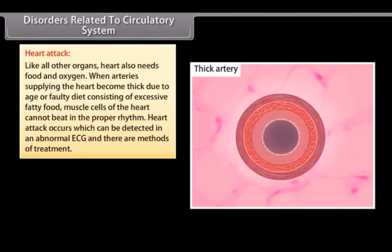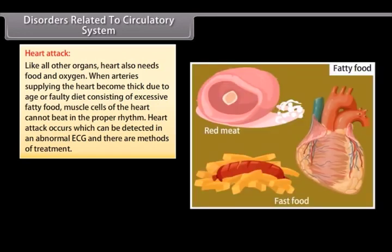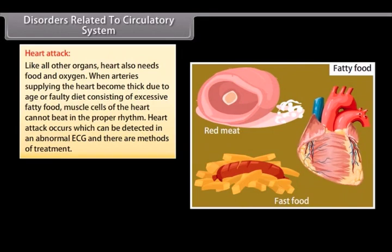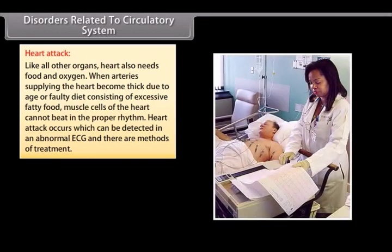Disorders related to circulatory system. Heart attack. Like all other organs, heart also needs food and oxygen. When arteries supplying the heart become thick due to age or faulty diet consisting of excessive fatty food, muscle cells of the heart cannot beat in the proper rhythm. Heart attack occurs which can be detected in an abnormal ECG and there are methods of treatment.